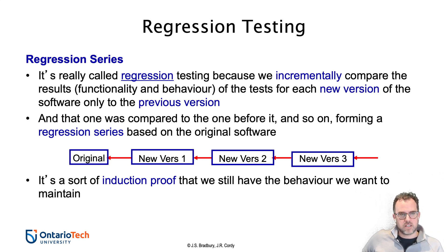Memory usage, CPU usage, network bandwidth — there are all kinds of things we could look at. It's very dependent on the software and its purpose. It could be number of CPUs utilized if you're talking about a parallel program. And the output is also key — both the standard output as well as any debugging or verbose output, assertion violations, logs, files, and so forth.